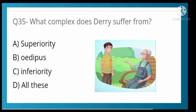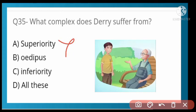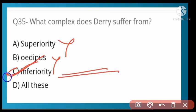What complex does Derry suffer from? Options: superiority, Oedipus, or inferiority. Option C is correct — inferiority complex. The feeling of inferiority settled in his mind. Option C is correct.